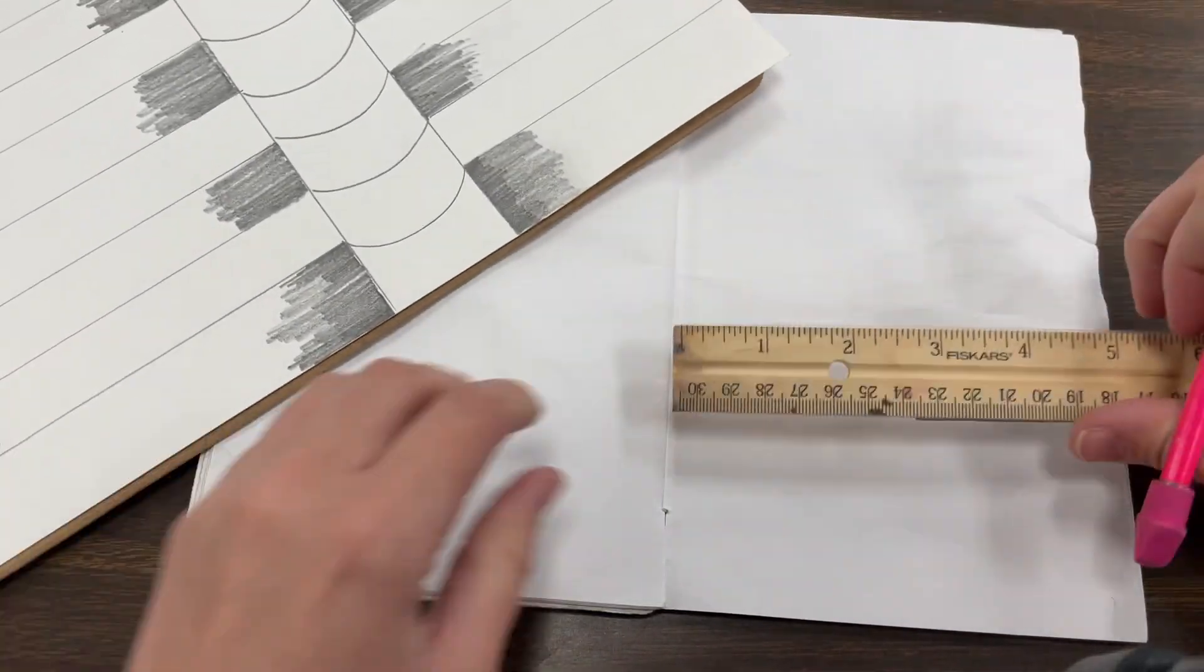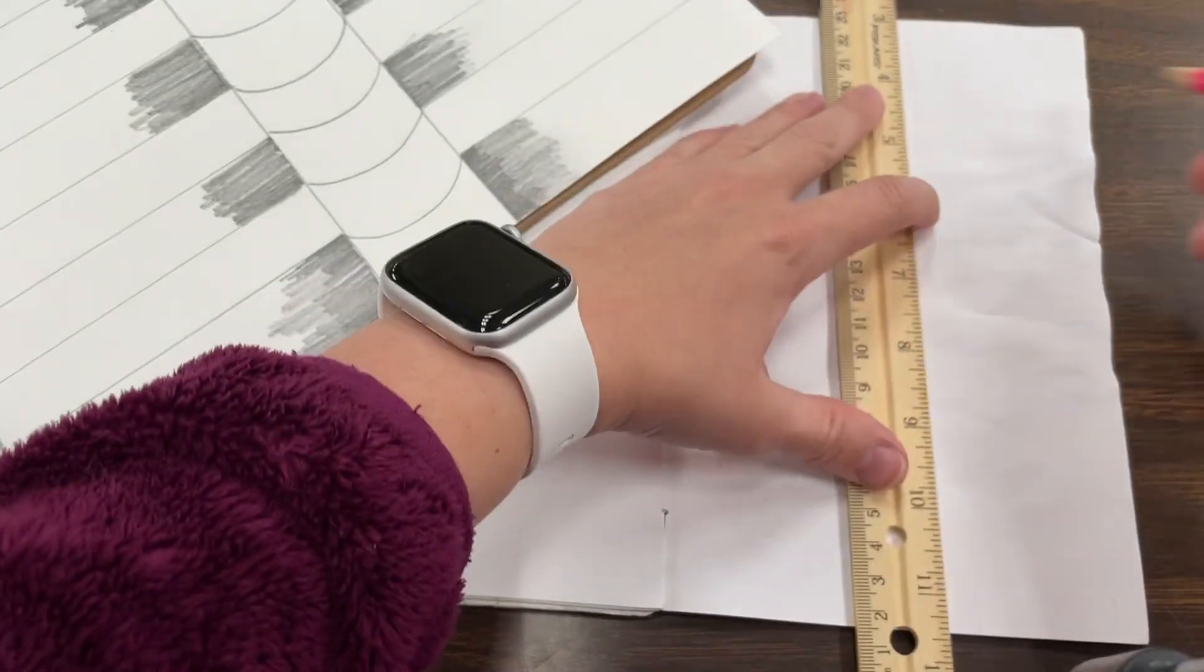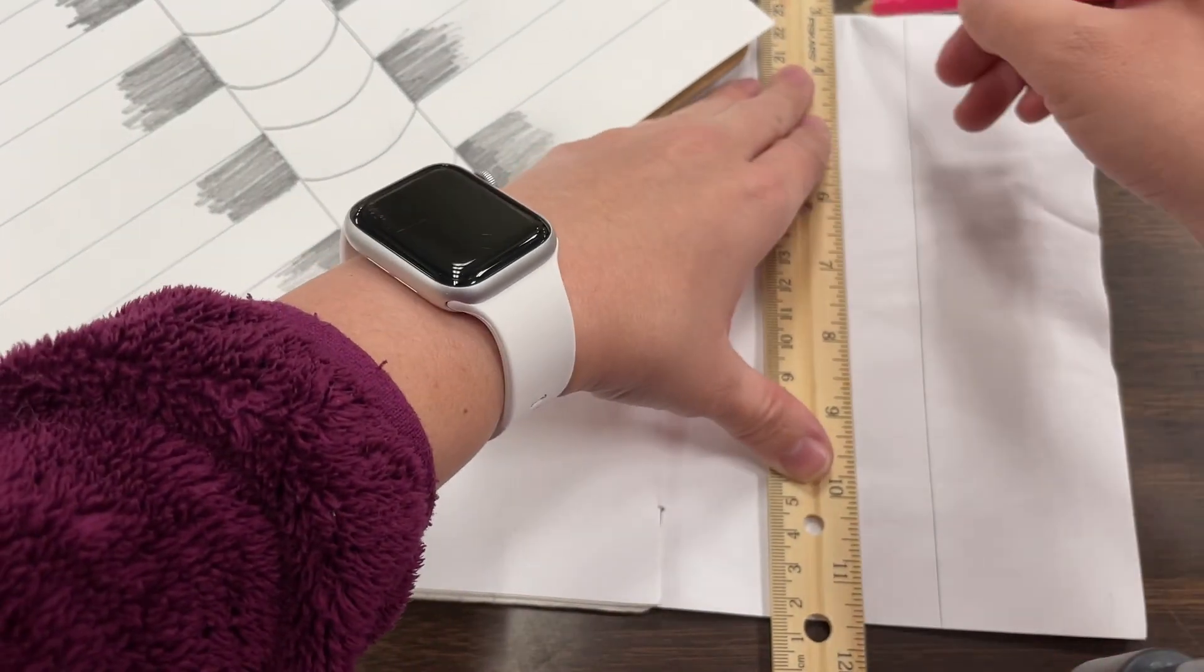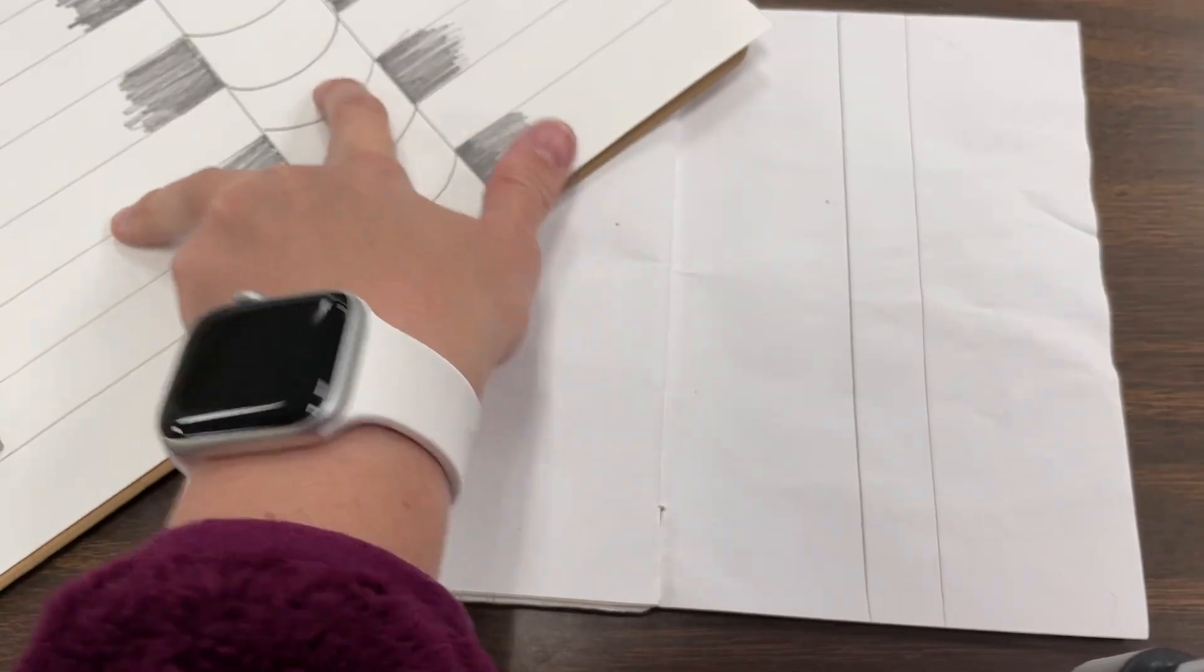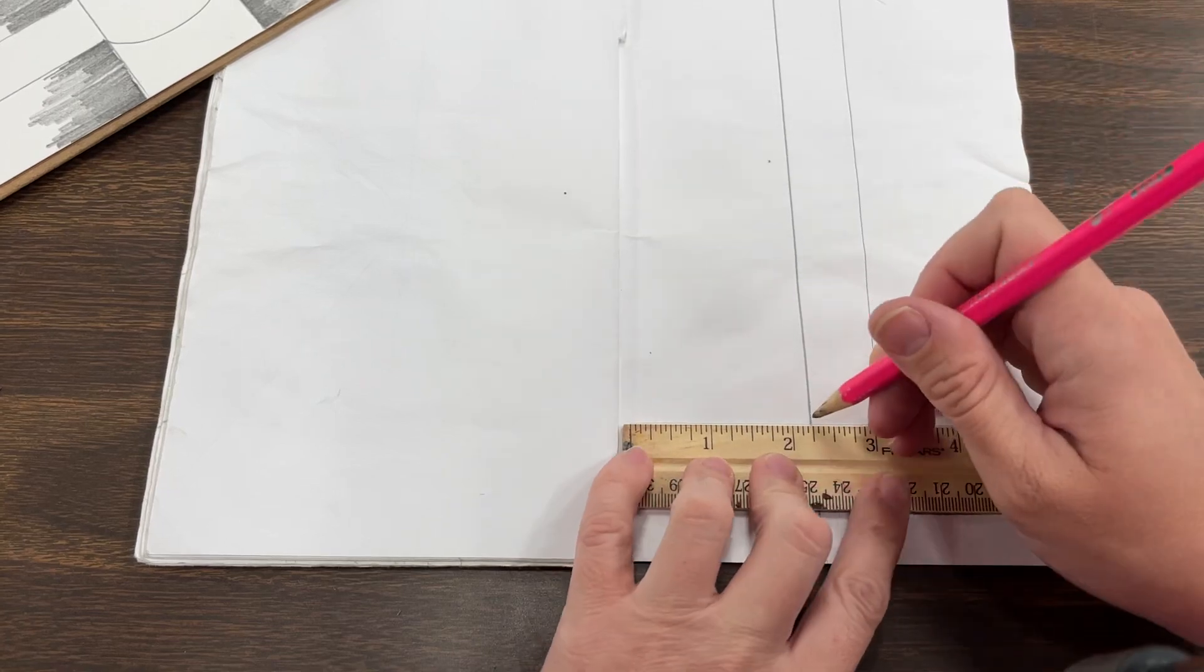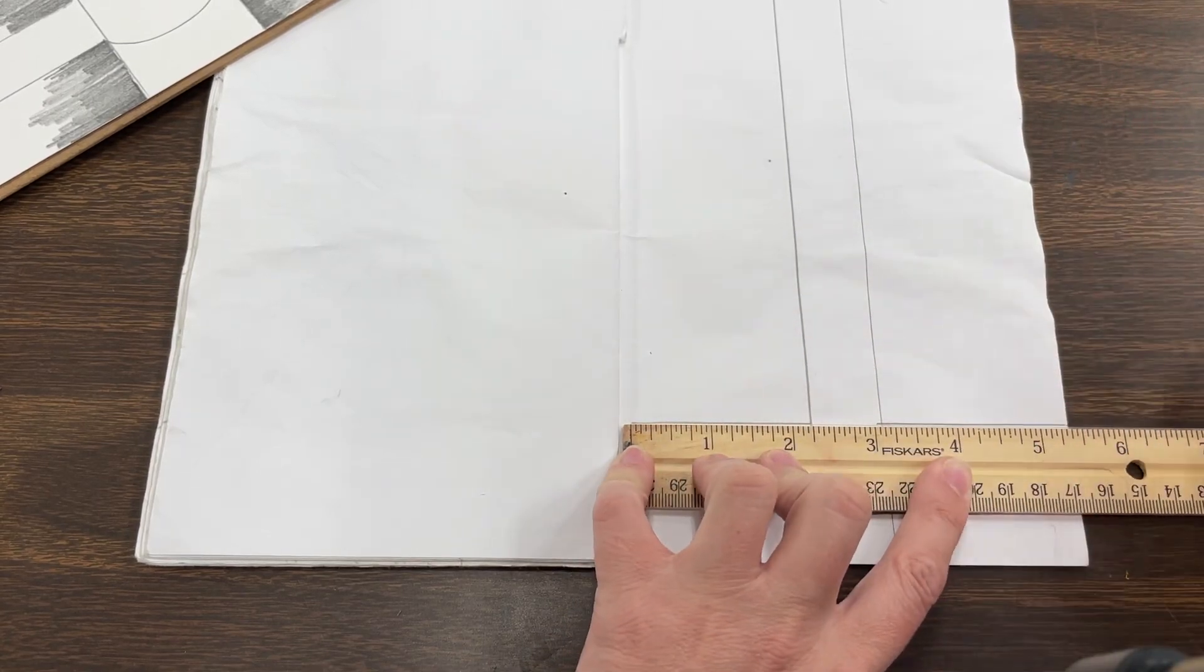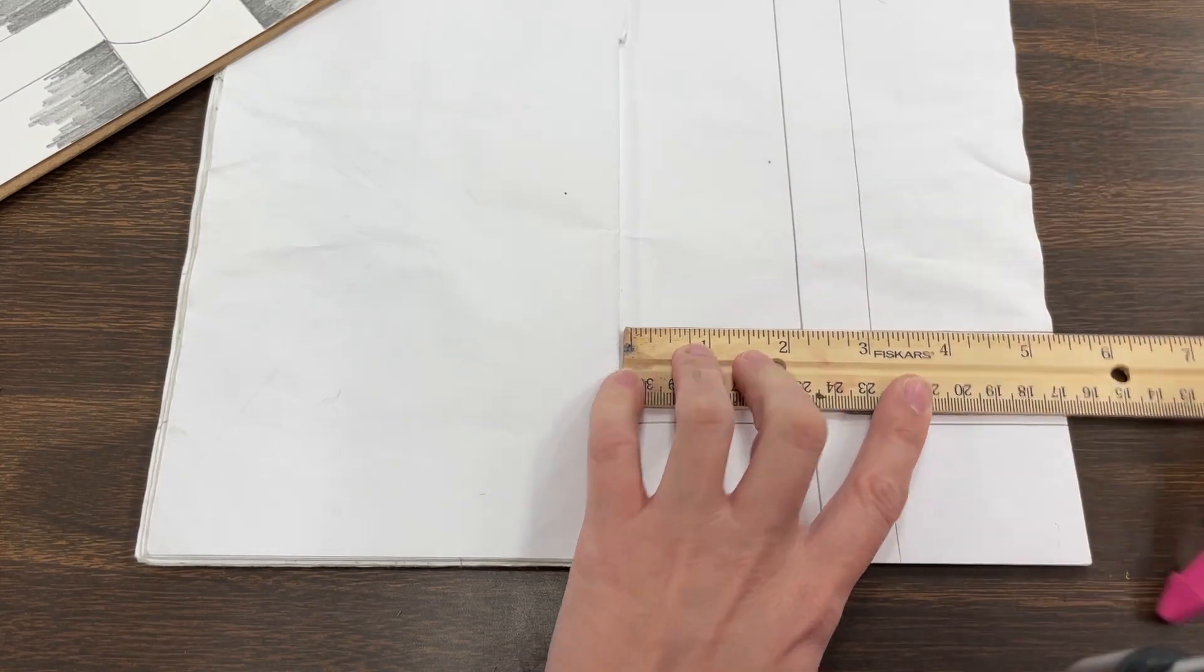What you do is you create this column. Say I'm going to do column right here down the center. So I have this column here. Now I'm going to do parallel lines going up and I'm going to not go through the column. I'm going to pick up my pencil and do just either side.